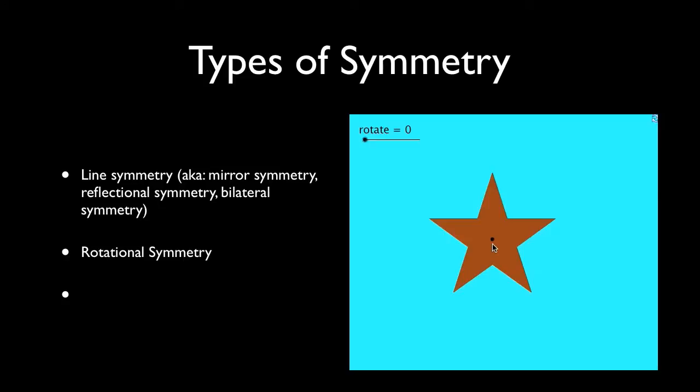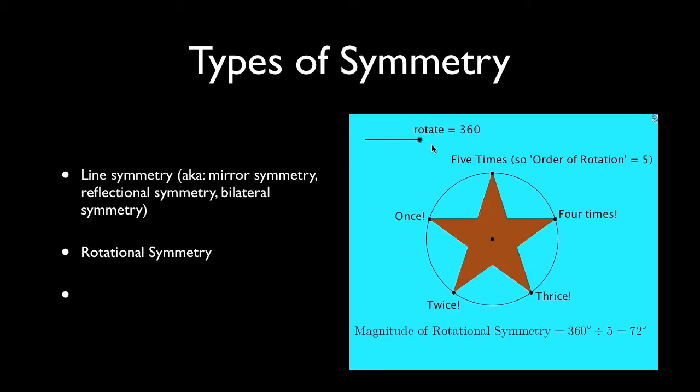Now another type of symmetry is called rotational symmetry. Rotational symmetry exists when the preimage and the image, when you rotate the preimage, the two shapes coincide. And so this picture here is an example of rotational symmetry.